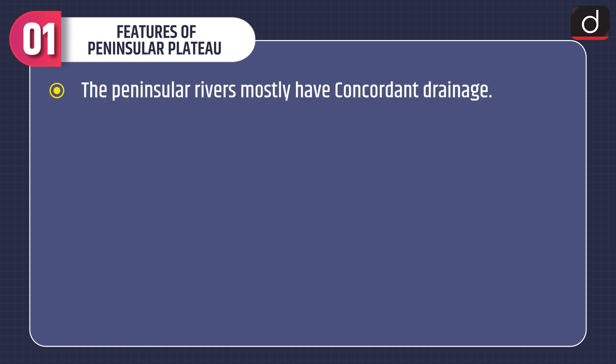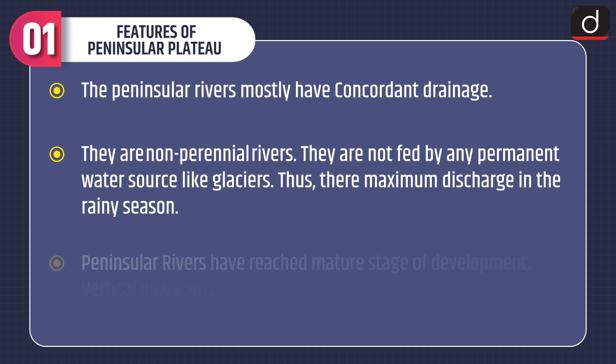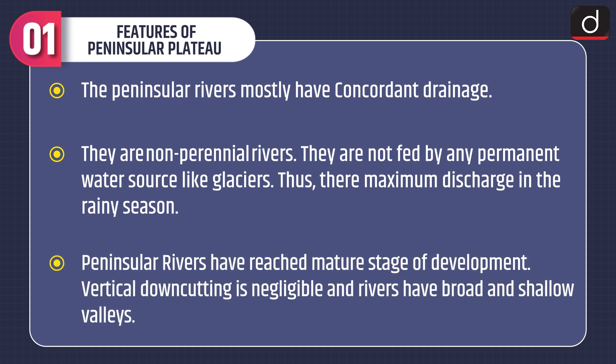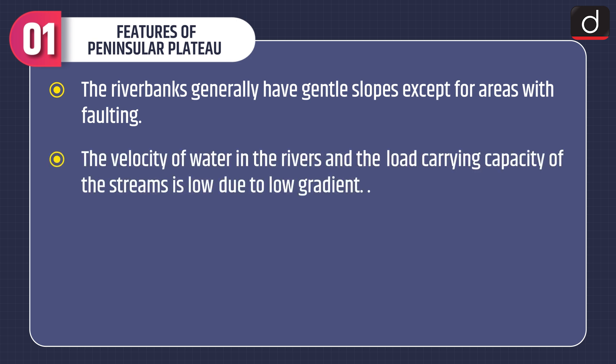Moving on to features of the Peninsular Plateau: the Peninsular Rivers mostly have concordant drainage. They are non-perennial rivers and are not fed by any permanent water source like glaciers. Thus, they have maximum discharge in the rainy season. Peninsular Rivers have reached a mature stage of development. Vertical downcutting is negligible and rivers have broad and shallow valleys. The river banks generally have gentle slopes except for areas with faulting. The velocity of water and the load carrying capacity of the streams is low due to low gradient.